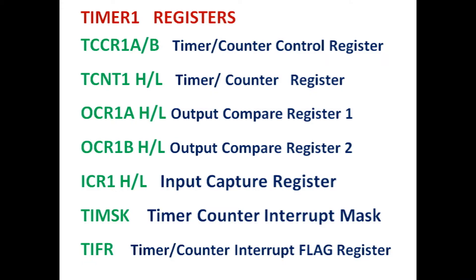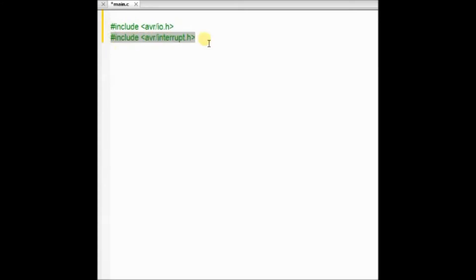These are the registers concerned with Timer 1. Timer 1 is a 16-bit timer. The timer counter control register has two 8-bit registers, A and B. The timer counter register has two 8-bit registers, H and L. The output compare registers have two channels, A and B — both are 16 bits. TIMSK and TIFR are common for all timers. Let us check the code now.